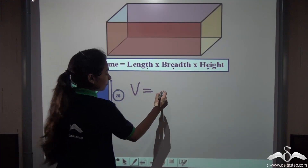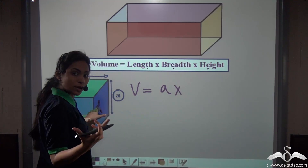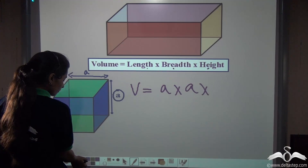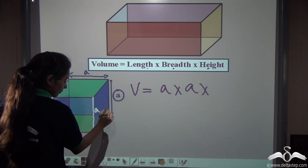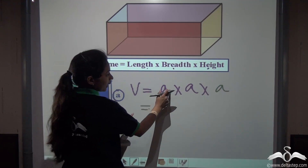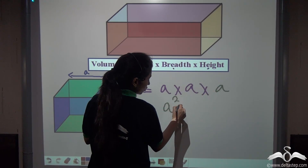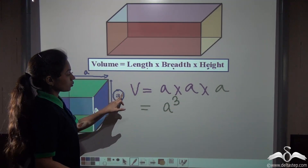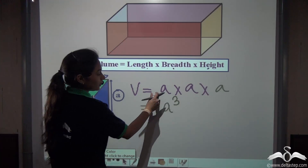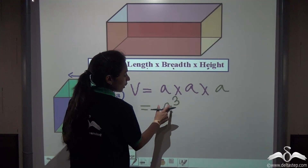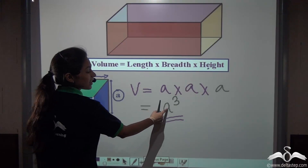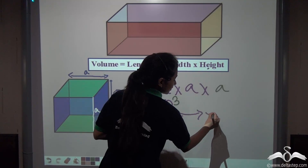So the volume of this cube will be: length, that is A, into breadth, that is also A. We can say A into A into A is A cubed. So we found out that the volume of a cube can be calculated by multiplying its side three times, giving A cubed. The formula for the volume of a cube is always A³, where A represents the edge.